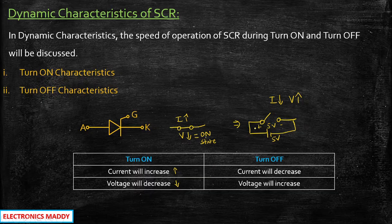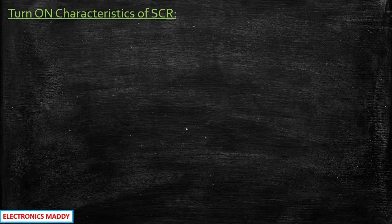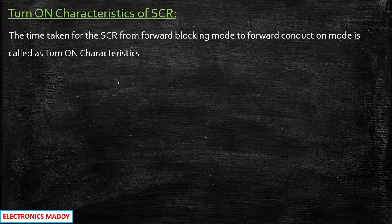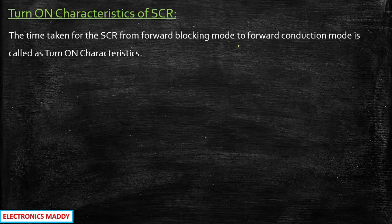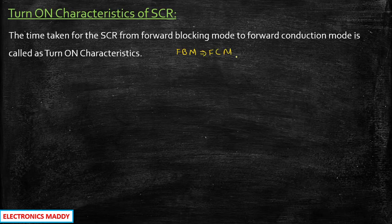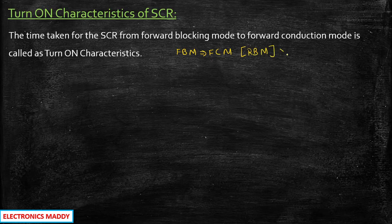Let's start with the turn-on characteristics. Turn-on characteristics is basically the time taken for the SCR to transition from forward blocking mode to forward conduction mode. You need to remember: it is not from reverse blocking mode — a lot of people have confusion about this — it is from forward blocking mode.